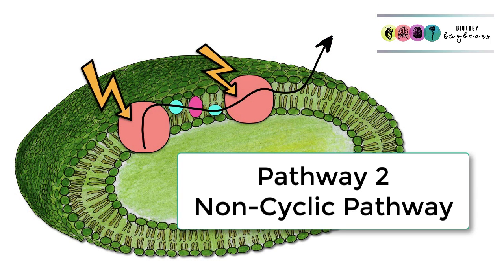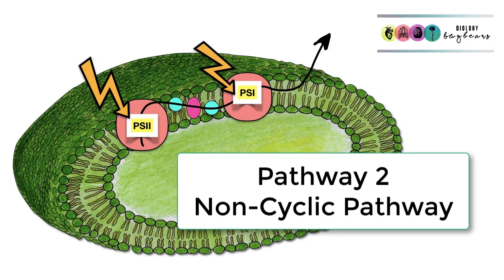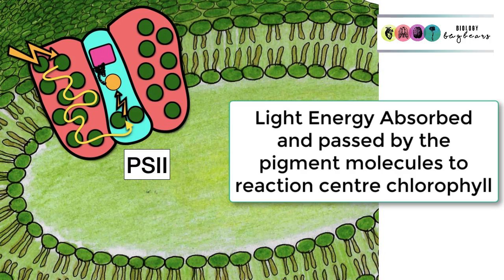Now let's go on to pathway 2, which is known as the non-cyclic pathway. You can see from the diagram that it involves two photosystems, photosystem 2 and photosystem 1. Pathway 2 begins in much the same way as pathway 1, except it begins with photosystem 2.